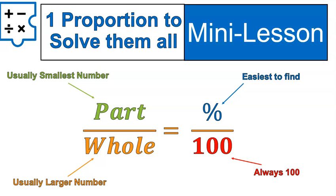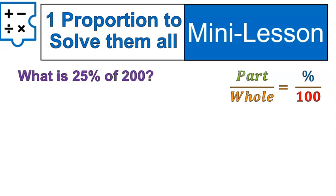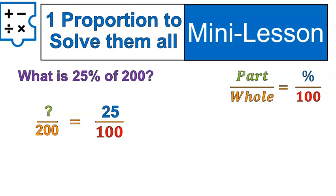The biggest challenge is being able to identify those four parts, put them into this proportion, and solve. You will be given three of the numbers and asked to solve for the other one — you'll always have the one hundred, so really you'll be given two of the remaining numbers. For example: what is 25% of 200? You can set up a proportion and identify the parts. The percent is 25, which goes where the percent goes. 200 is the whole amount, and we're solving for the part using cross-multiplying.